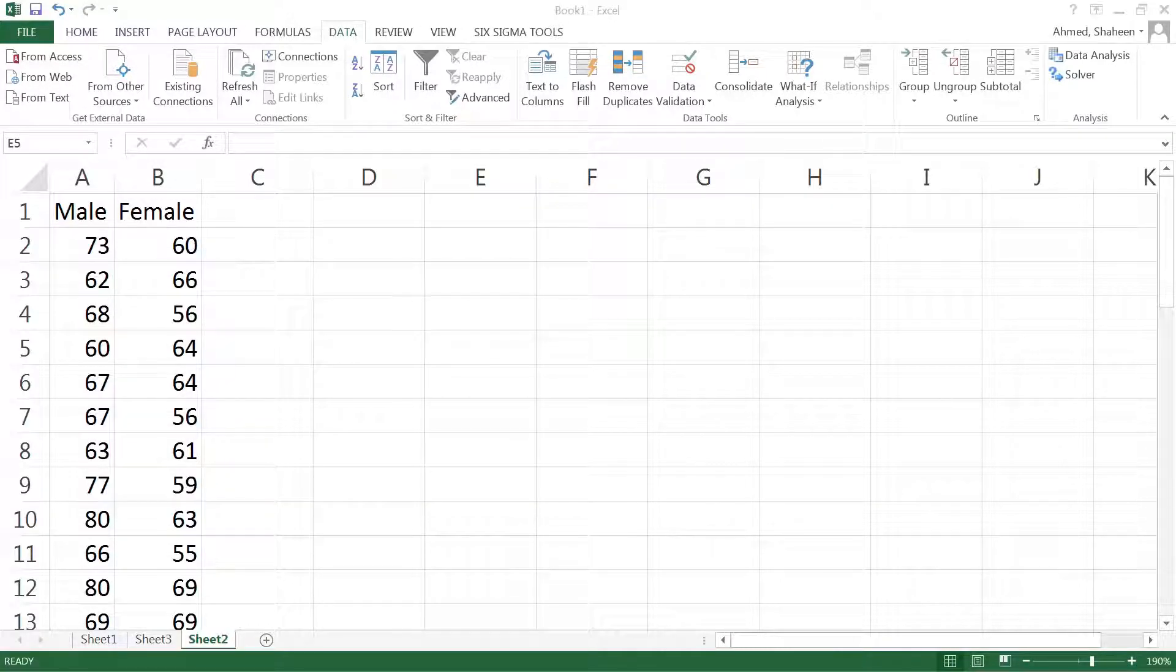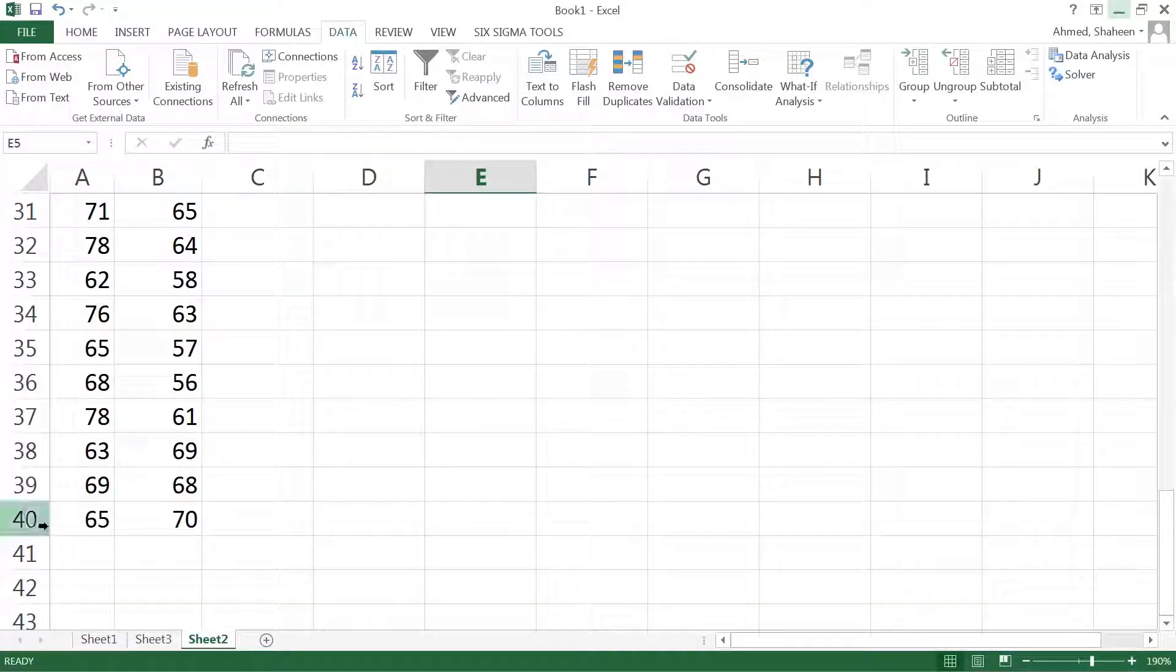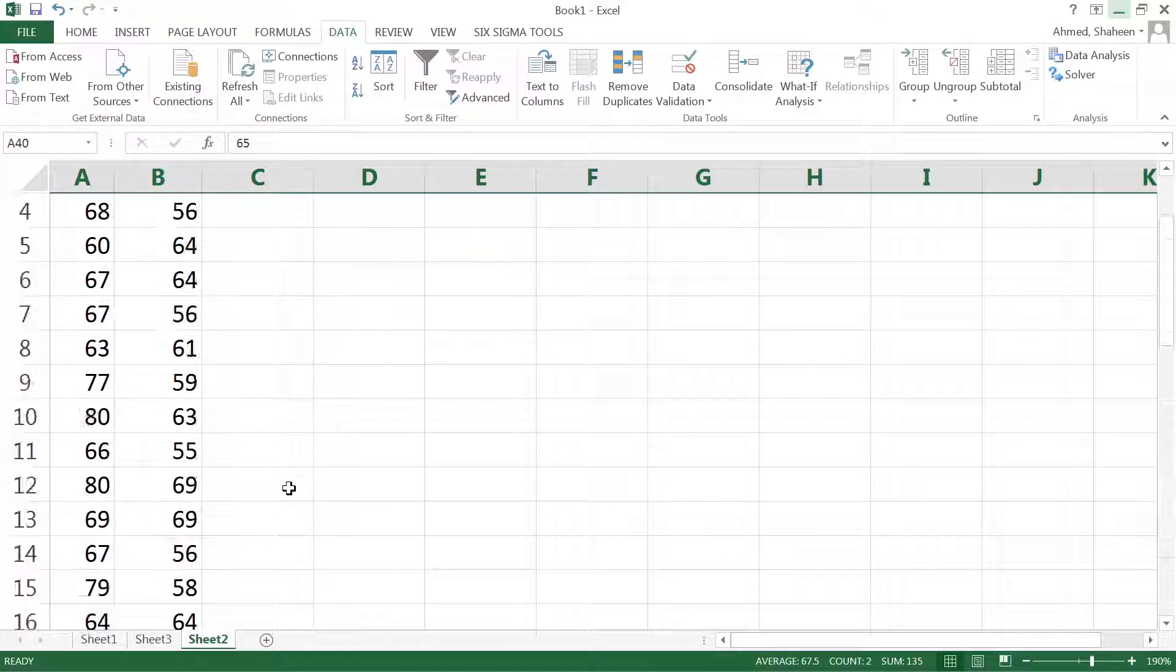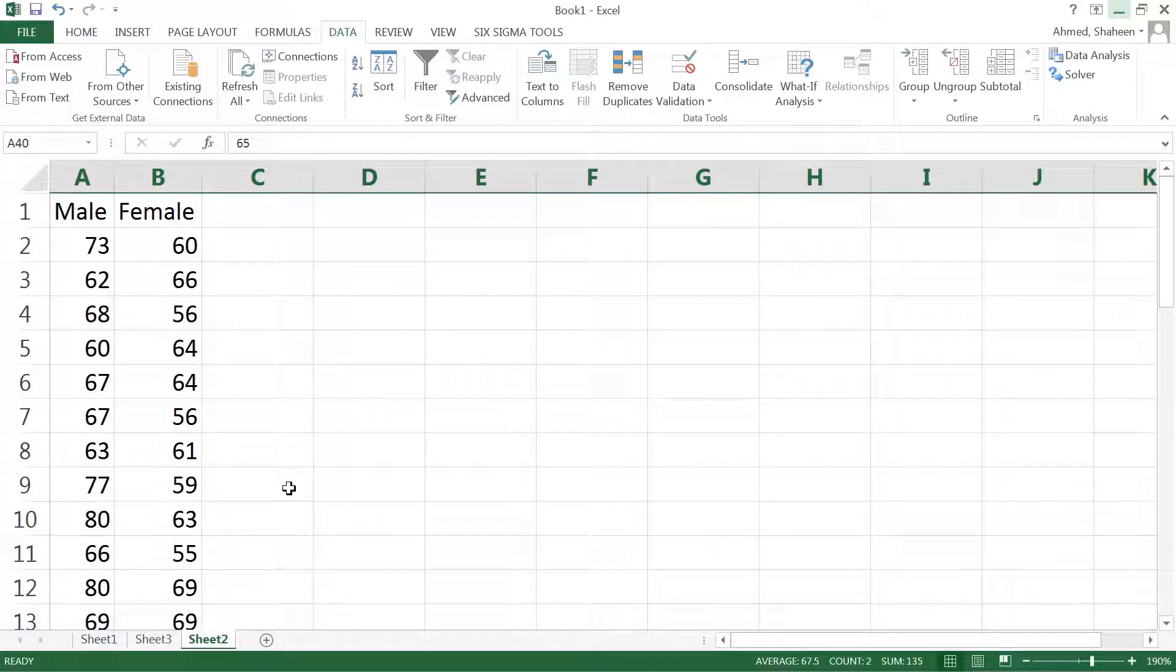To demonstrate the four-step hypothesis process or the four steps in any research method or research process, I would like to use this example comparing the height between the male and female population in the United States. I have collected 39 randomly selected females and 39 males' height data. Now I would like to see...